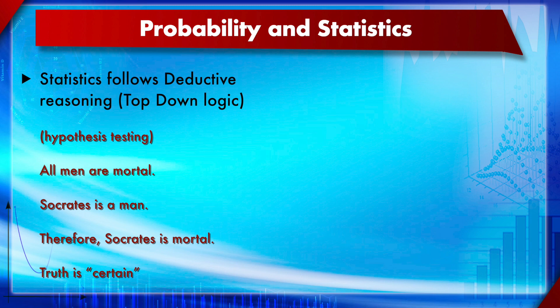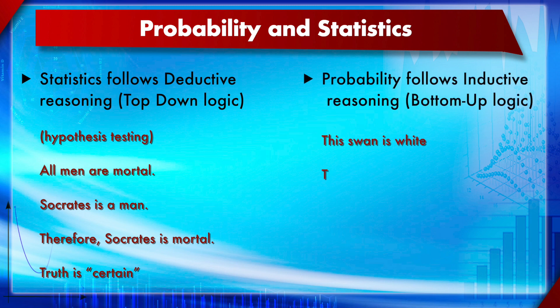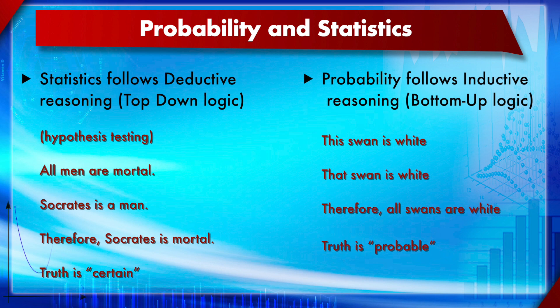In the case of probability, the approach is different — it follows inductive reasoning, from bottom to top. For example: this swan is white, that swan is white, therefore all swans are white. That conclusion is not certain — we can only say most probably all swans are white. In inductive reasoning there is no certainty, it is always probable. Some arguments are cogent where the probability is very high, while some are fallacious where it is quite low.